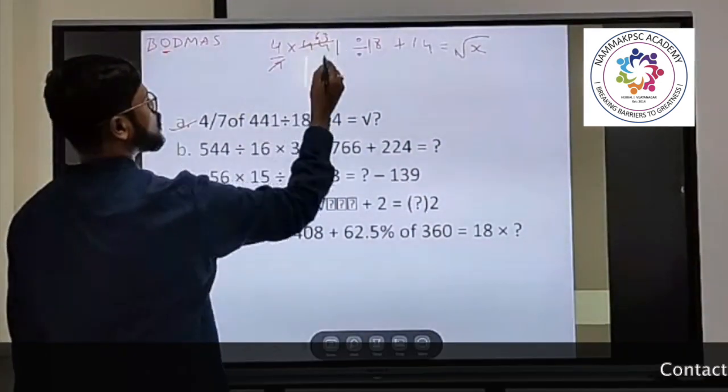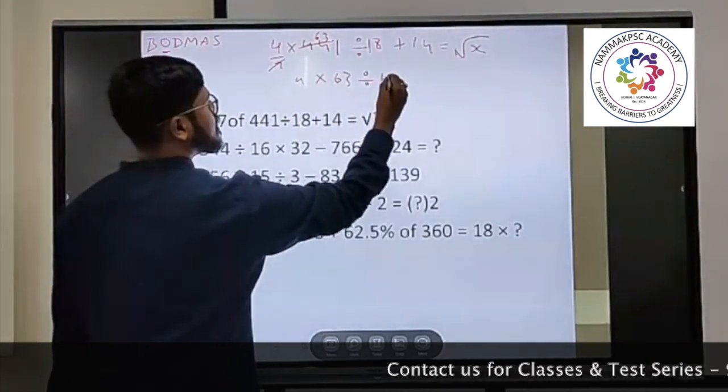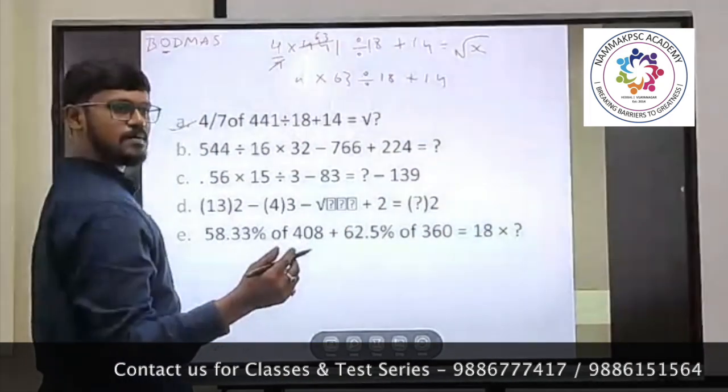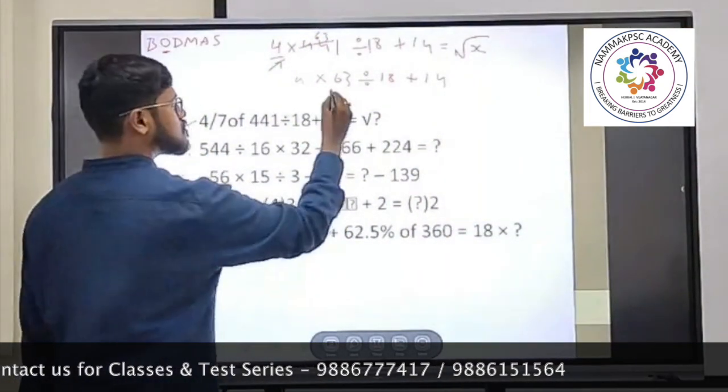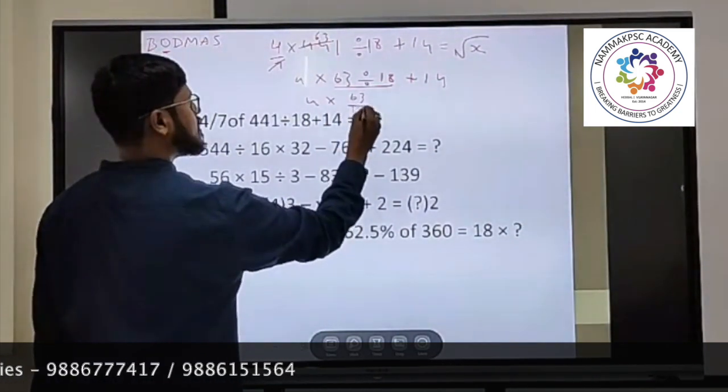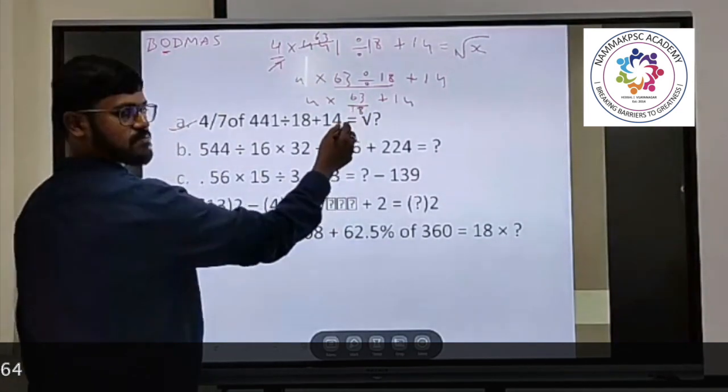Again, BODMAS rule, what will come? Division will come. So 4 into 63 divided by 18 plus 14. How many times 9? 2 times 9, 7 times.